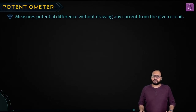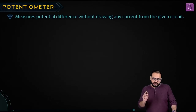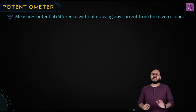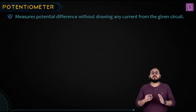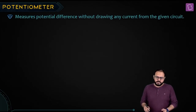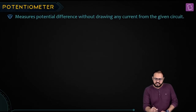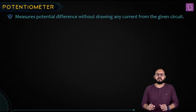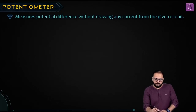So as usual, first I will explain to you in my own handwriting, and then I will give you the fair version of it. Potentiometer is actually nothing but — first of all — it is made up of a primary circuit.